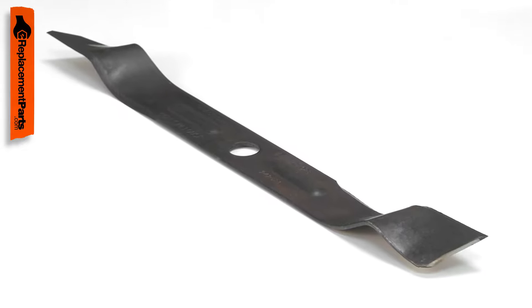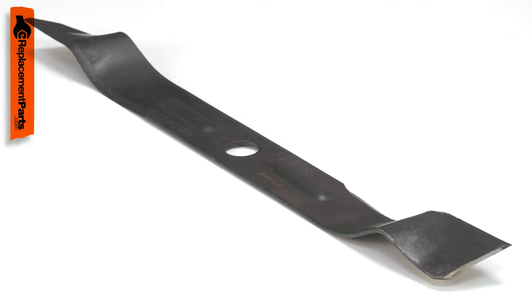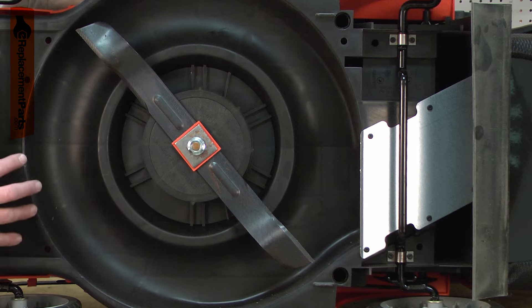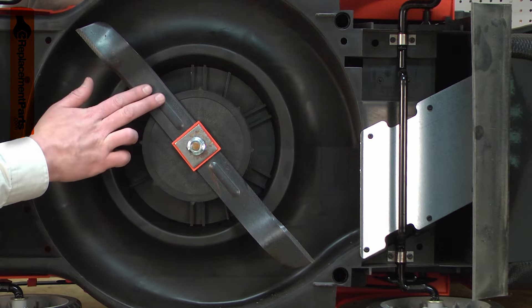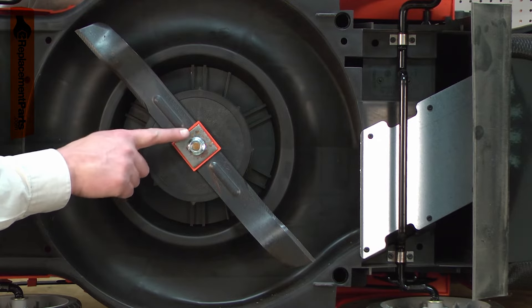The mulch blade on your lawnmower is used for both mulching and bagging the grass clippings from your lawn. A sharp blade will cut the lawn using less power from the mower and will give a clean cut which helps to keep the lawn healthy.